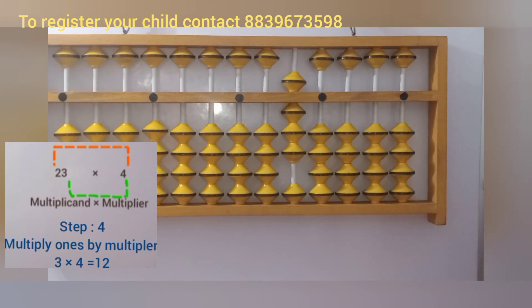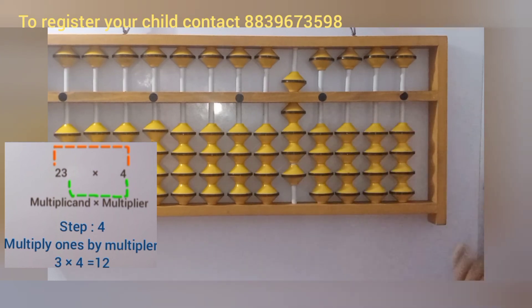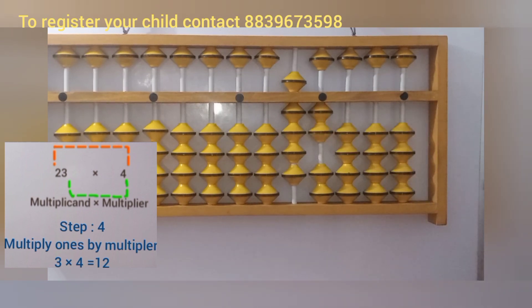In the 10th place we will add 1 bead up, 2 beads up in the 10th place, and 2 beads up in the 1s place. Now you can see we get the answer 92. So 23 multiplied by 4 is 92.